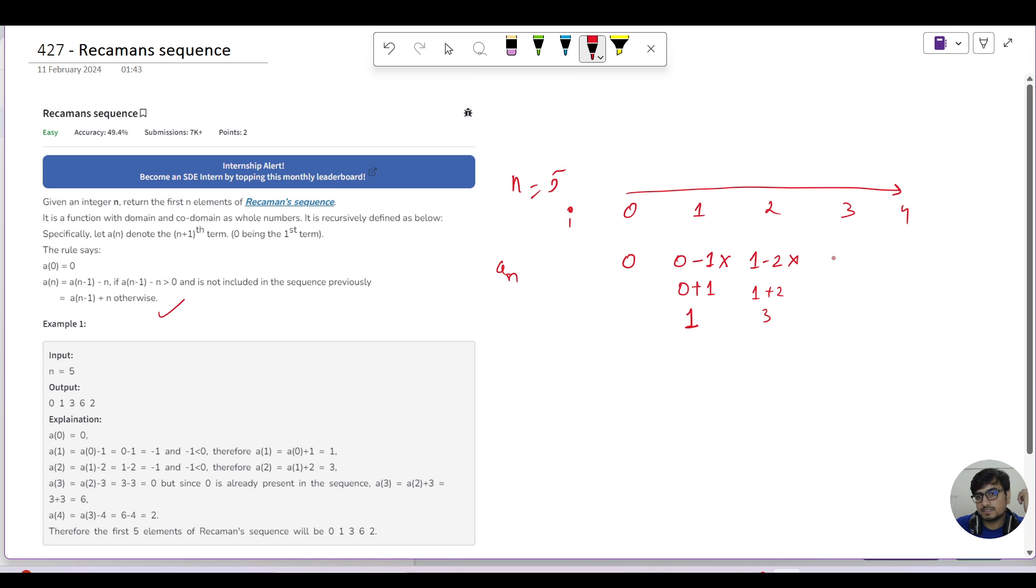So we replace it with 1 plus 2, which is 2, which is greater than zero. So I will replace the number with 2. Similarly, in the third case, my previous number is 2 and I will do 2 minus 3. Now it is not greater than zero, so again the first condition is false and I will replace it with 2 plus 3, which is 6.